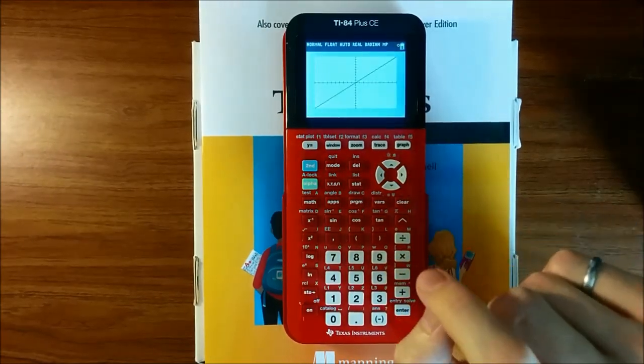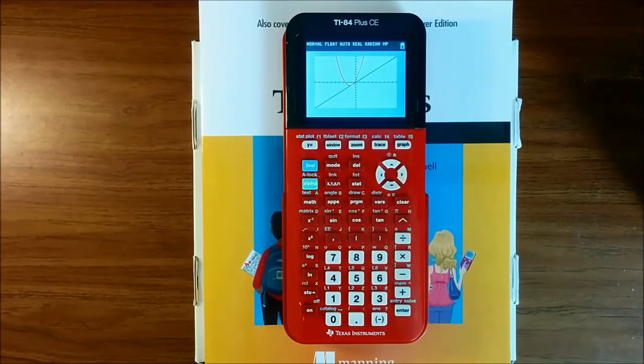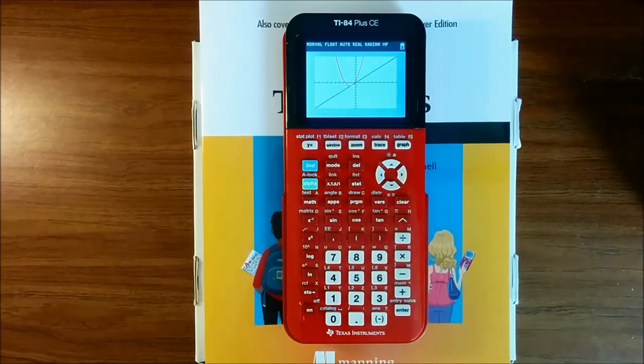So 3 plus 1 and so on. Now, if I press graph again, the calculator will draw the second line that we've requested, a parabola. Interesting. It looks like these two graphs actually intersect at a point.